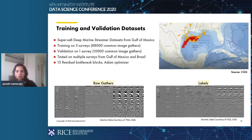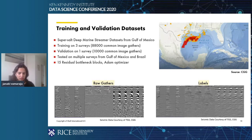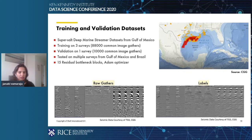We train our models on super-salt deep marine streamer data sets from Gulf of Mexico. We train on three surveys which have about 88,000 common image gathers, and validation is done on one survey. You can see how the raw gathers look from different surveys and the corresponding labels. We tested the model on multiple surveys from Gulf of Mexico and Brazil. We use 15 residual bottleneck blocks, the structural similarity index as the loss function, and the Adam optimizer.